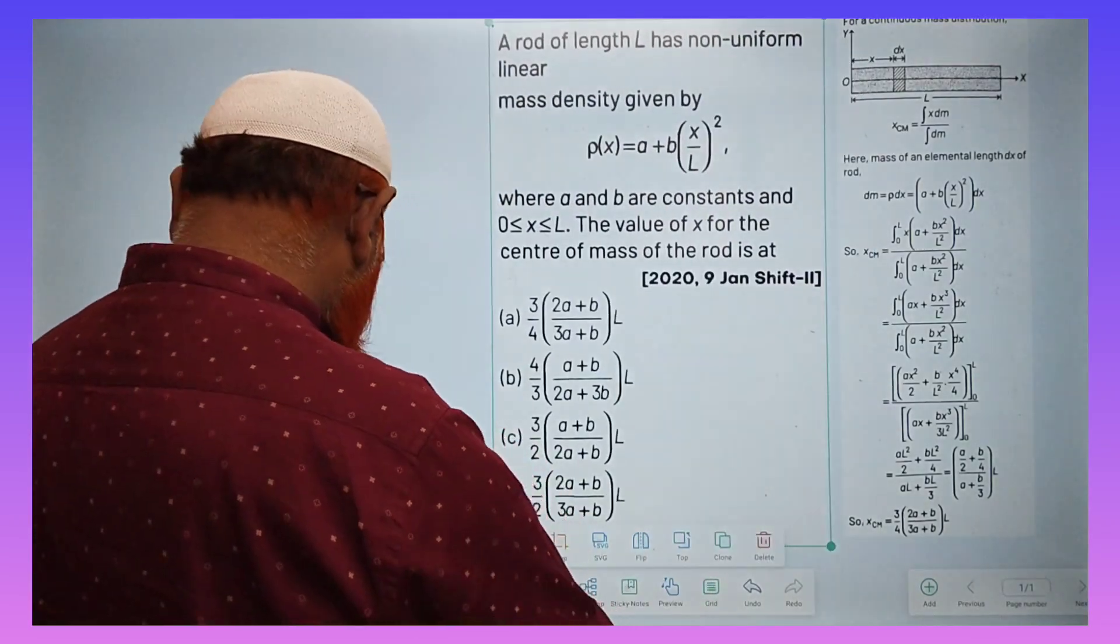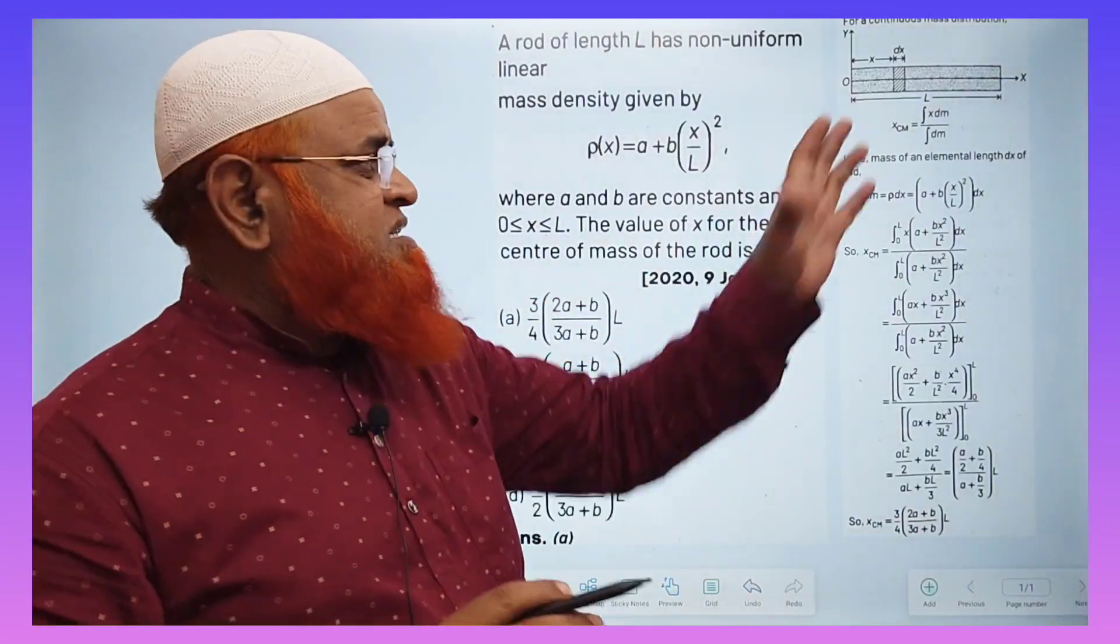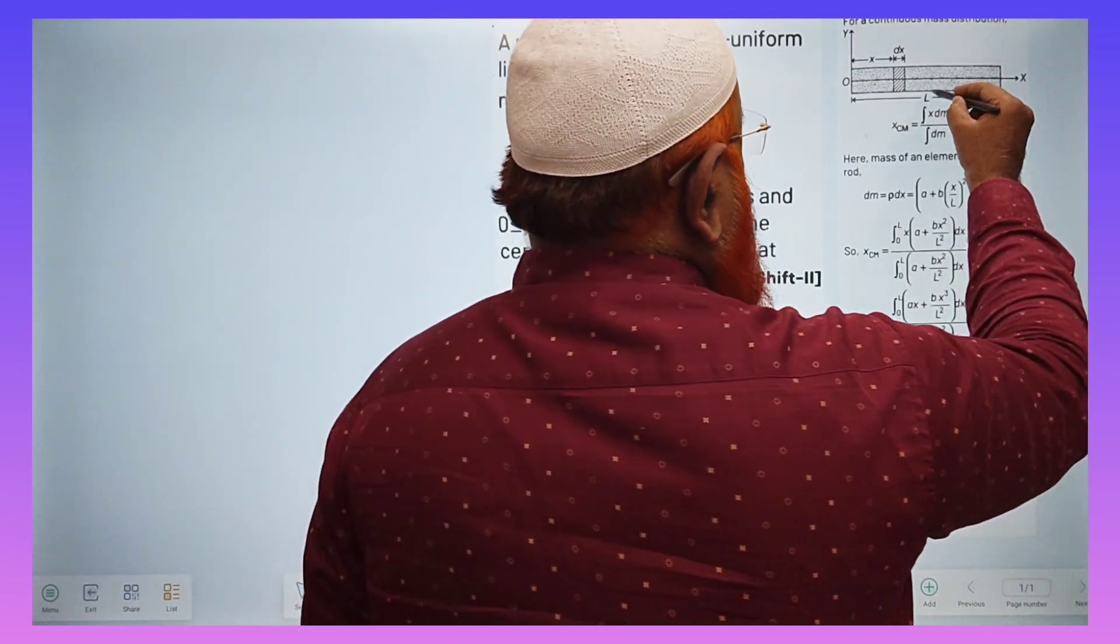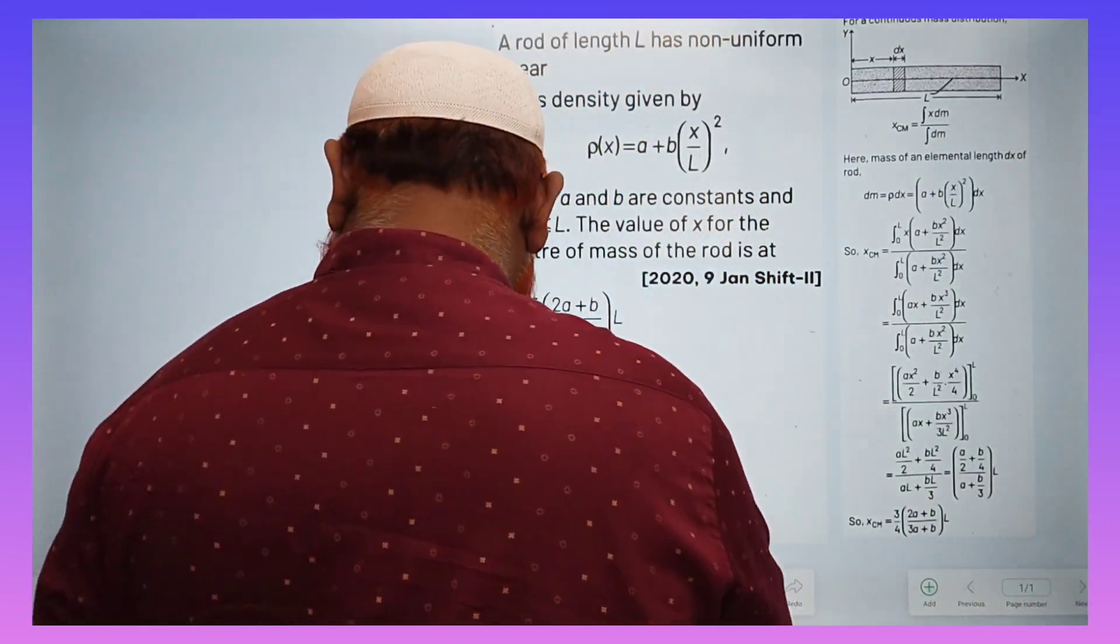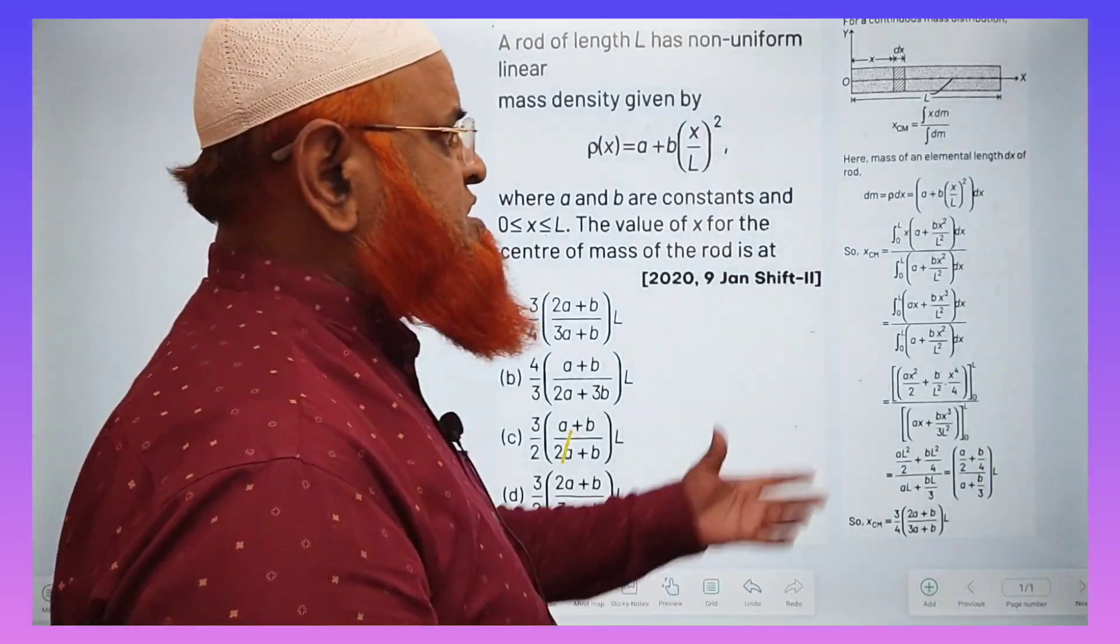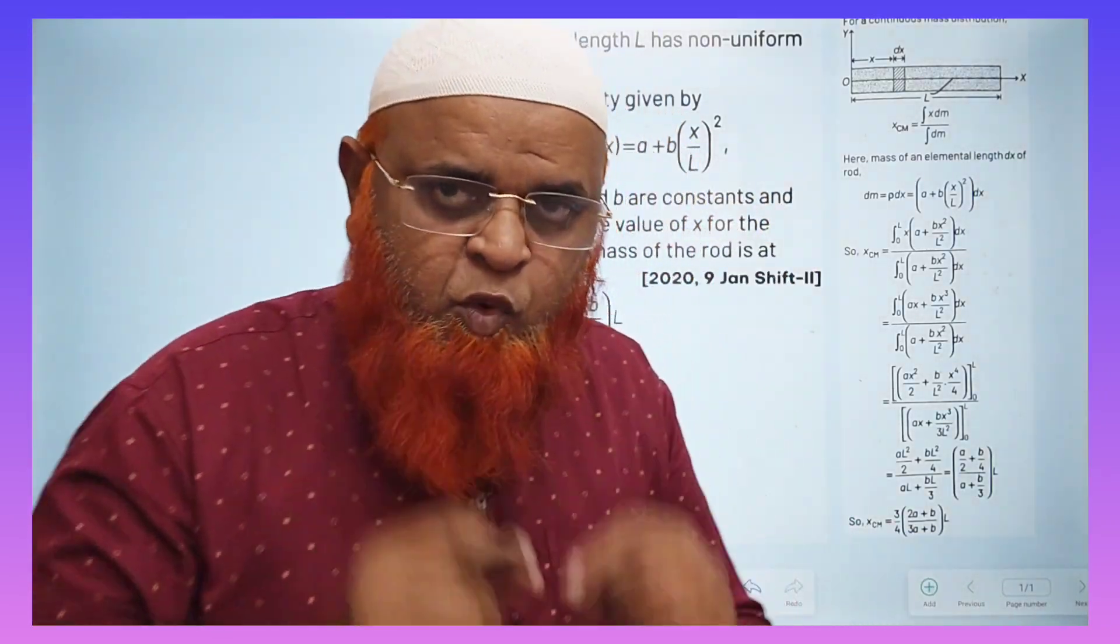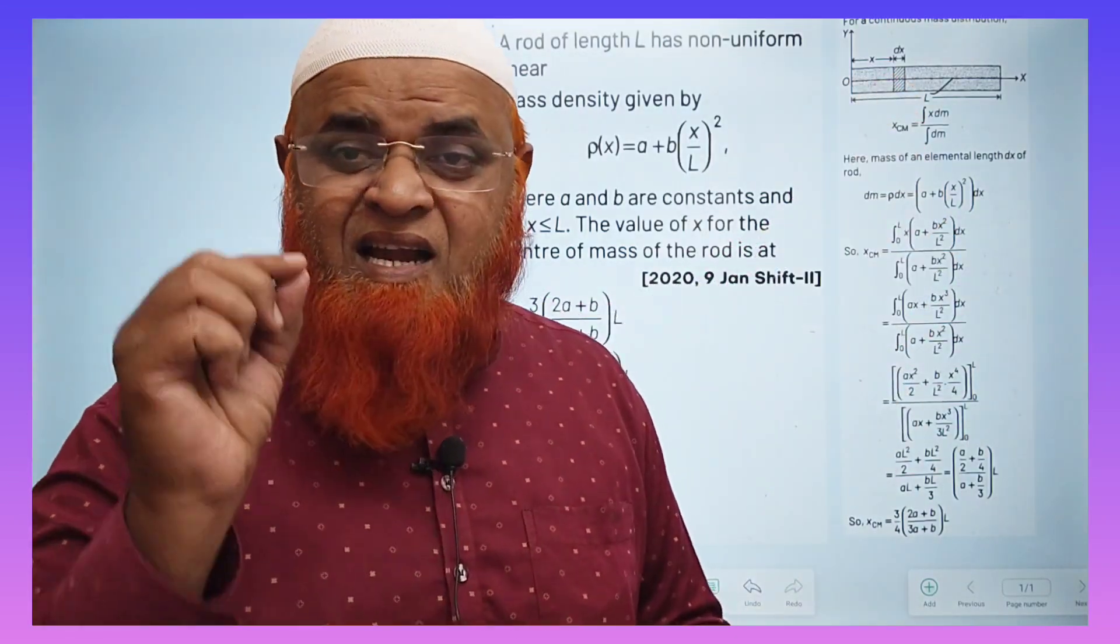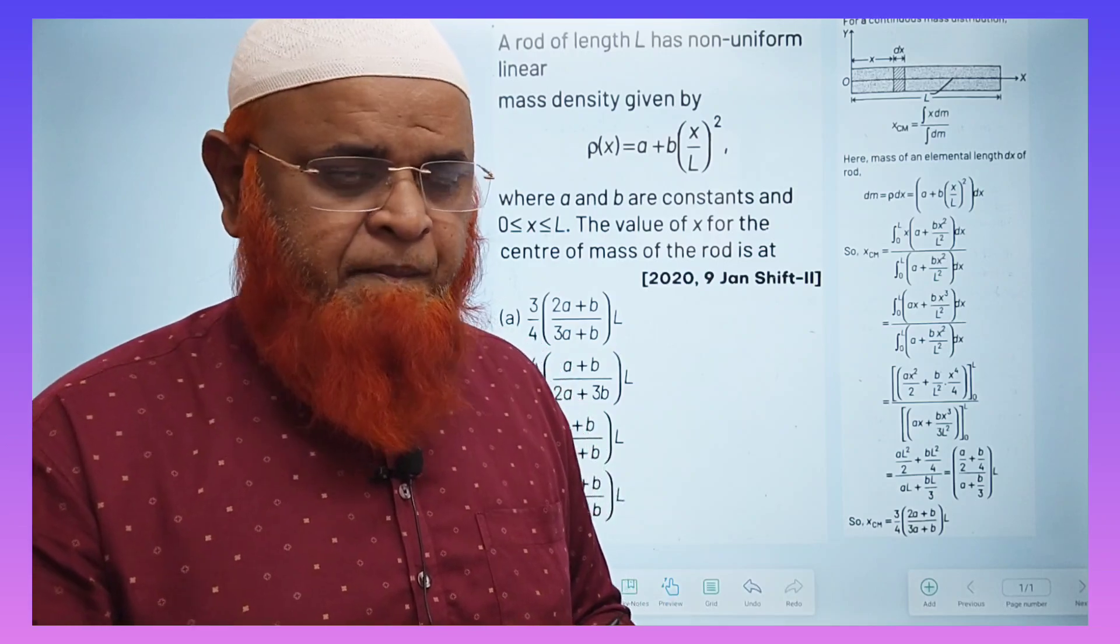So how is the density going to change? Let us see. This is a rod whose length is taken as L. If it was a uniform rod, then the center of mass would be exactly at L by 2.